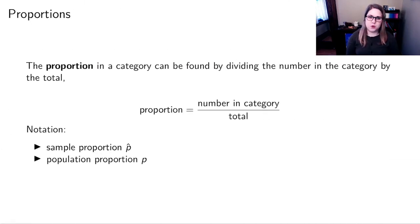And then another type of numeric statistic that we might want to compute is a proportion. And the proportion is just the number in the category over the total. And we have some notation that we're going to use. So if we're talking about a proportion from our sample, we're going to call it P hat. And if we're talking about a proportion from the whole population, we'll just call that P.